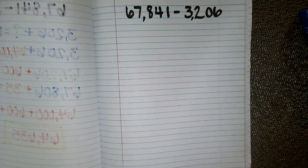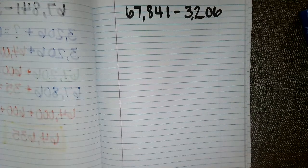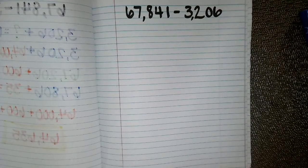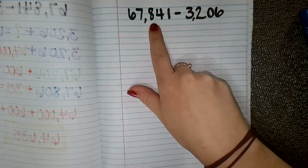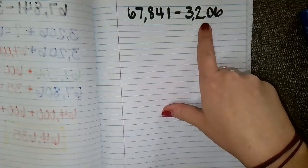Now in this subtraction strategy, we're going to do what's called keeping a constant distance. So it's pretty self-explanatory. What we add or subtract from one number, we are going to add or subtract from the other number as well.